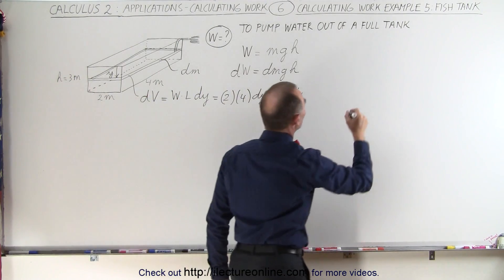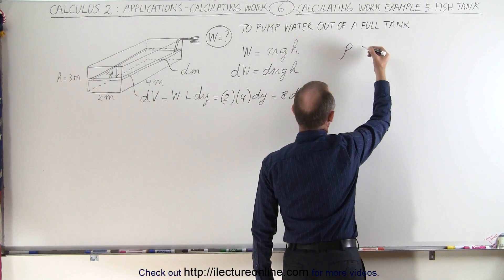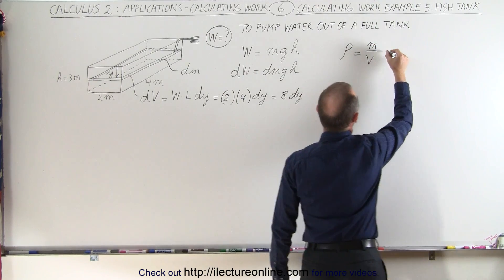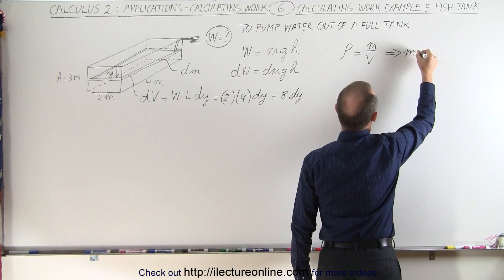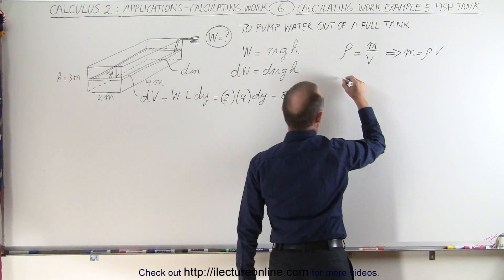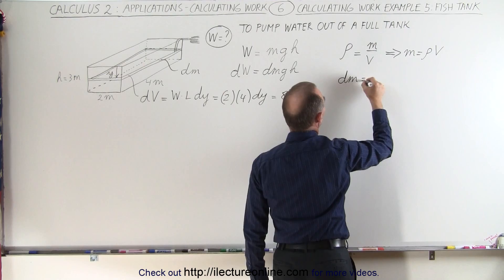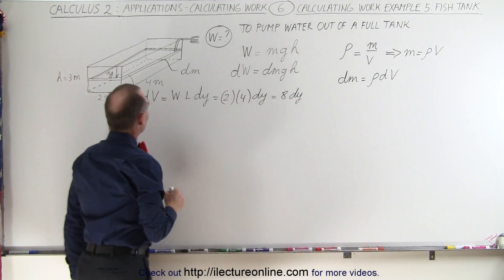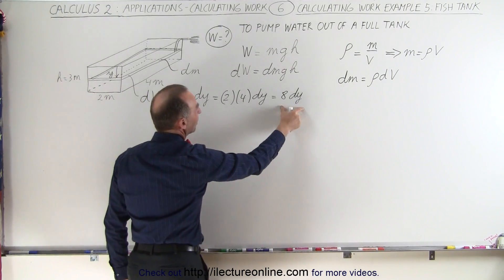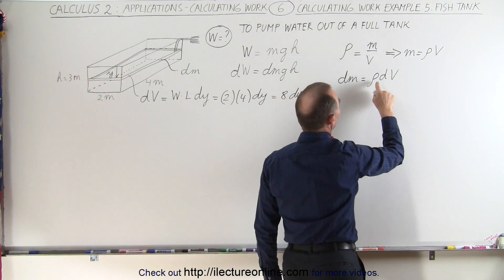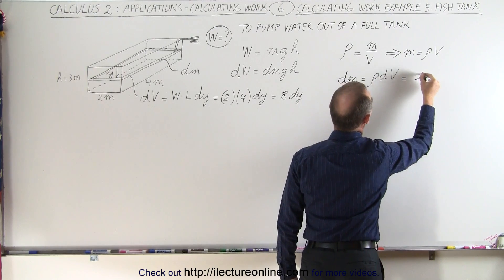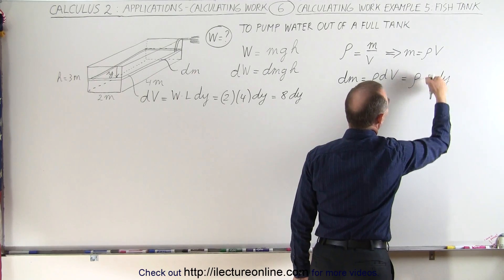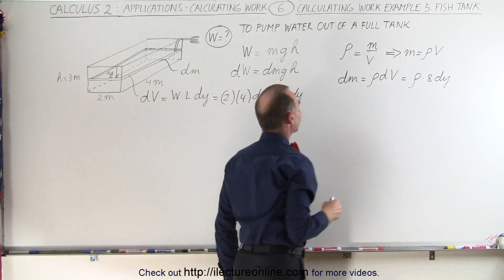We use the relationship that the density of a substance — in this case water — is equal to mass divided by volume. This means mass equals density times volume, and therefore a small amount of mass dm is equal to the density times a small amount of volume. Since dv equals 8dy, dm equals density times 8dy.